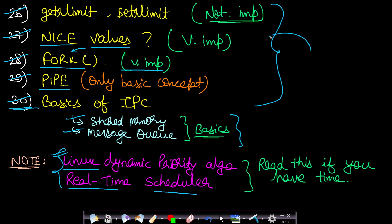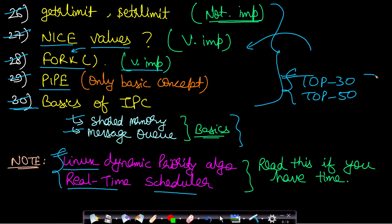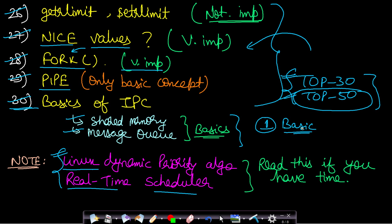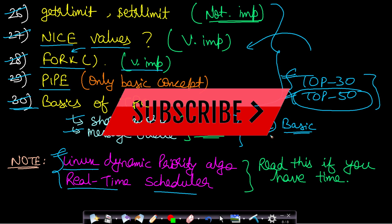If you have completed all 30 topics and still have time, you can read top 30 or top 50 questions from the internet for additional question types. However, many questions found online are irrelevant to actual interviews. For campus freshers, you should expect only basic questions and no commands unless you have mentioned Linux experience in your CV. Good luck — like and share the video and subscribe to the channel to watch more programming videos.